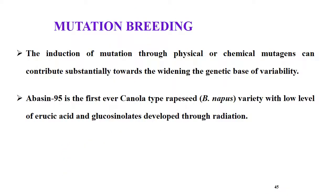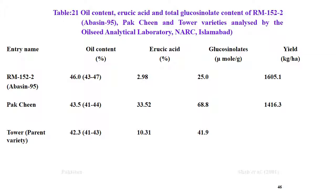Coming to mutation breeding in Brassica: induction of mutation through physical or chemical mutagens can substantially contribute to widening the genetic base of variability. Regina was a cultivar developed through mutation breeding. Abacin 95 is the first ever canola-type rapeseed of Brassica napus variety with low erucic acid and glucosinolate content developed through radiation. The oil content, erucic acid (approximately 3%), and total glucosinolate content (25 micromoles per gram) of Abacin 95 were analyzed along with Pak, Chin, and Tower varieties by the oilseed analysis laboratory in Islamabad, with yield of 1.6 tons per hectare.